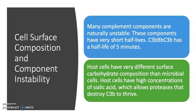Two large natural ways the body regulates the complement system are cell surface composition and component instability. Complement components are naturally unstable and have very short half-lives. For example, C5 convertase from the alternative pathway only has a half-life of five minutes.